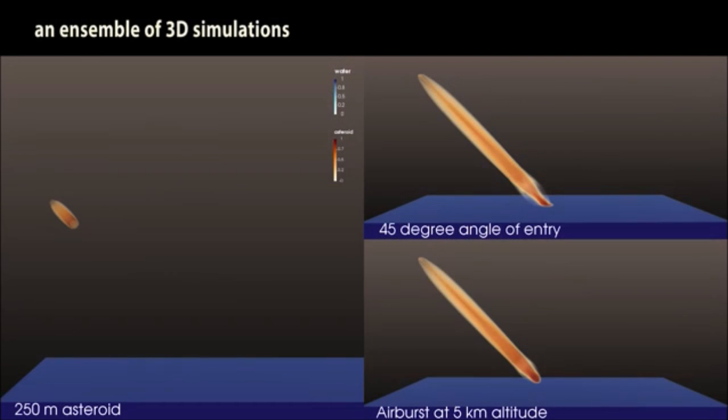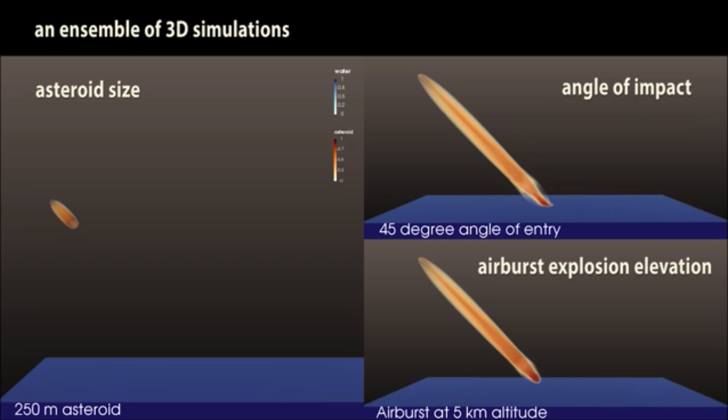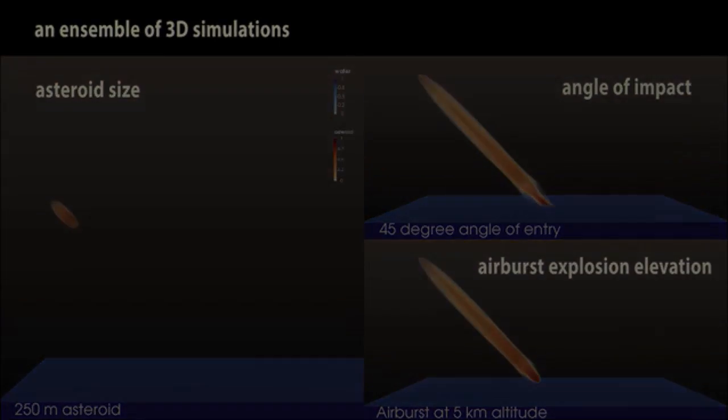Los Alamos scientists ran an ensemble of 3D simulations, varying the asteroid's size, the angle of impact, and whether or not the asteroid exploded in an airburst before impact. The height of this airburst was also varied.